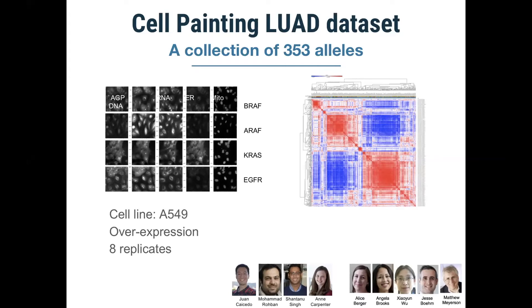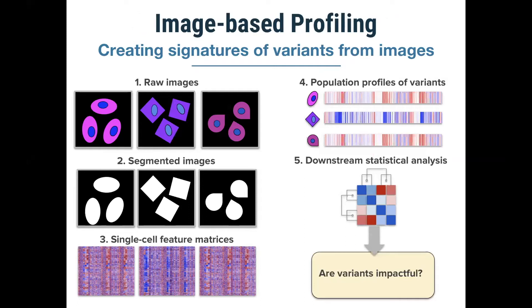After capturing the images, the computational workflow for transforming them into quantitative information is the following: we start with different conditions or treatments and capture images with multiple replicates. We then process the images and identify single cells using segmentation algorithms, which identify the region in which each single cell is located. Next, we compute multiple morphological features characterizing the cell state as observed in the image — including shapes, colors, textures, and many other properties measurable using image processing algorithms.